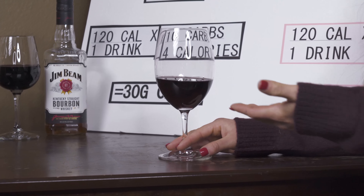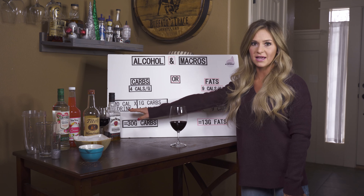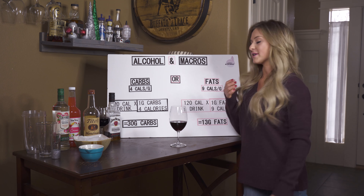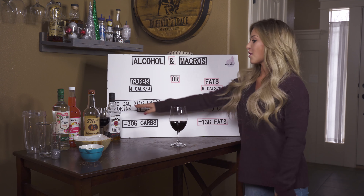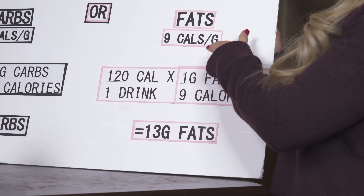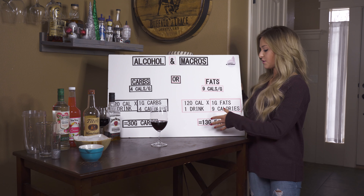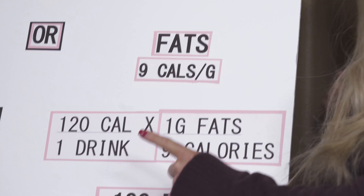You can track alcohol in MyFitnessPal as either carbs or fats. Carbs have four calories per gram, so a typical five-ounce glass of wine is around 120 calories. All you do is divide 120 by four, and that one glass of wine accounts for 30 grams of carbs.